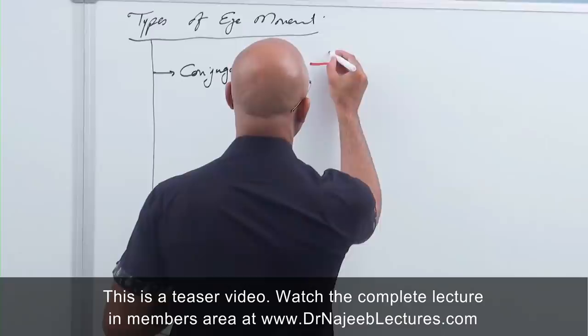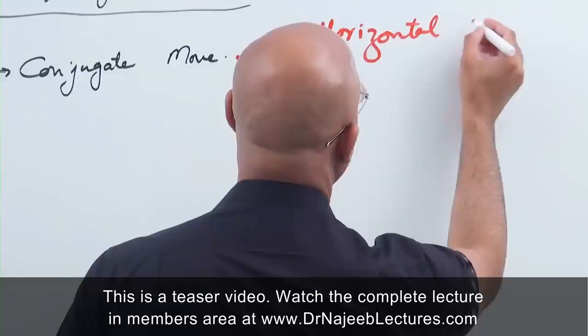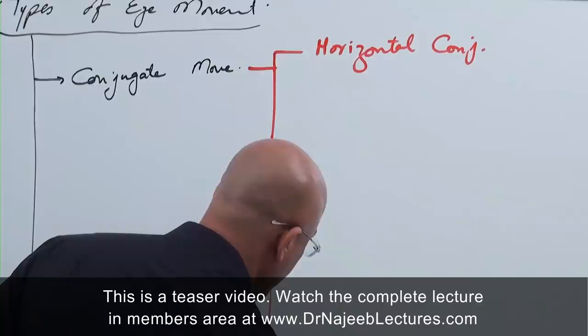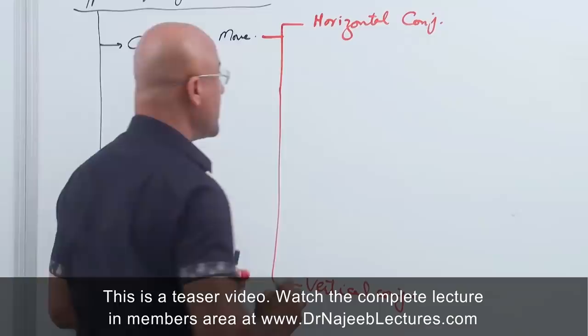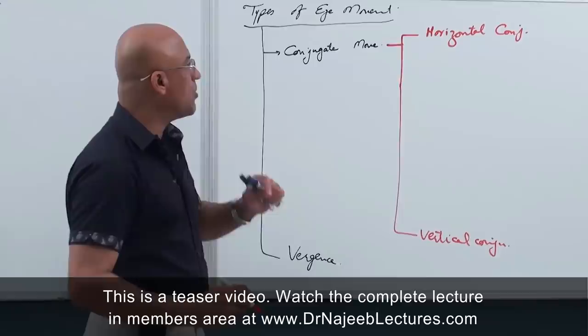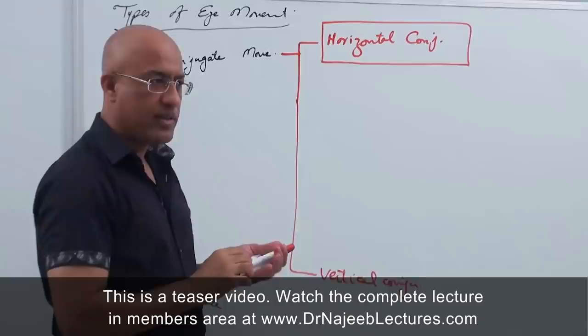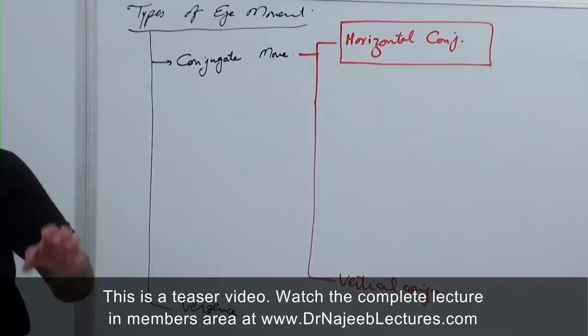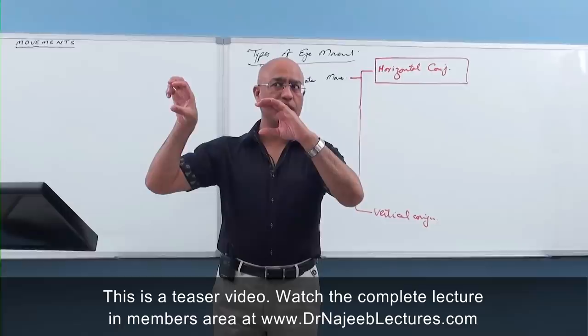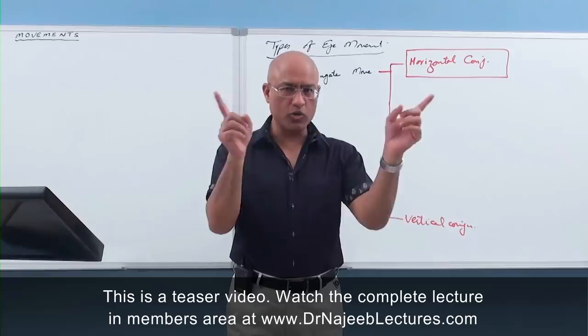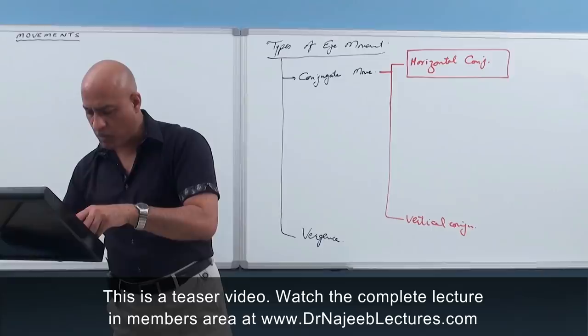Conjugate movements can be in two planes: horizontal conjugate eye movements and vertical conjugate eye movements. Now if we focus on horizontal conjugate eye movement — which is the main topic today — we are talking about how the eyes move to right gaze or left gaze. There are different types of horizontal conjugate eye movements.